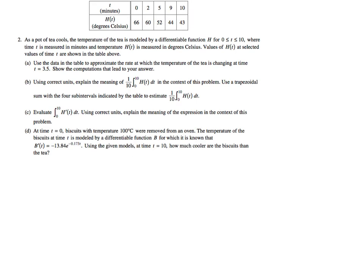On to part D. Now it says at time T equals 0, biscuits with temperature 100 degrees Celsius were removed from the oven. The temperature of the biscuits at time T is modeled by a differentiable function B, for which it is known that B prime of T, again we're focusing on the fact that this is B prime not B, B prime of T is equal to negative 13.84 e to the negative 0.173T. Using the given models, at time T equals 10, how much cooler are the biscuits than the tea? Well, we already know from the table that at time T equals 10, the tea is 43 degrees. So we know that from up here. Now we need to figure out what's the temperature of the biscuits. Well, we know that the biscuits started at 100 degrees Celsius. And then this is their rate of change.